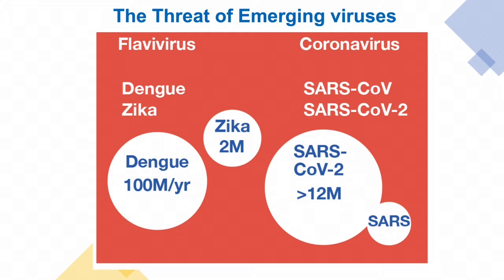Dengue, Zika and SARS are all important human pathogens, and here are a few numbers to illustrate the global burden caused by these viruses. Dengue is estimated to infect about 400 million people annually, of which 100 million develop symptoms. Zika infected about 2 million people during the outbreak in 2016, and SARS-CoV-2 has infected more than 12 million, and the pandemic is still ongoing.